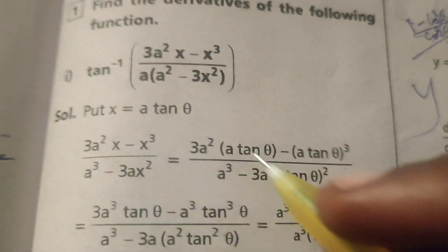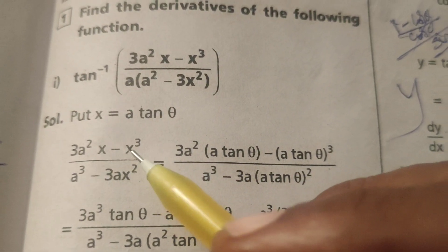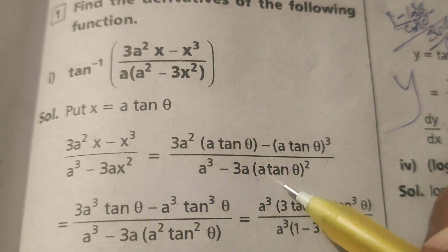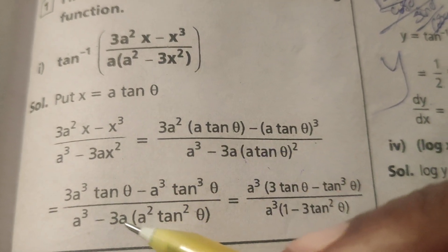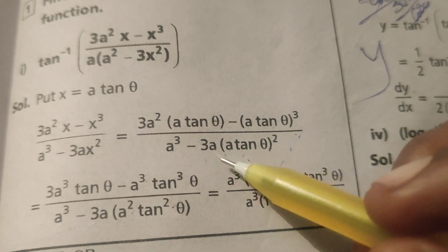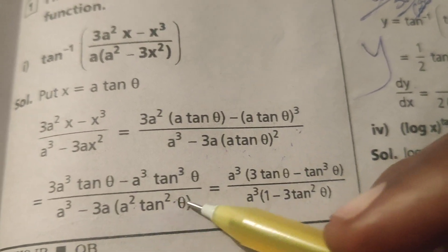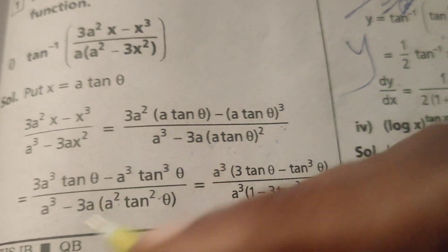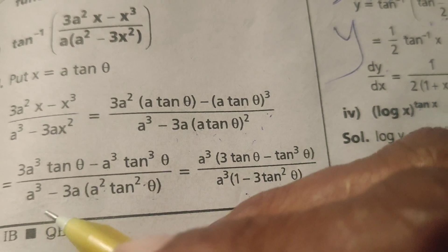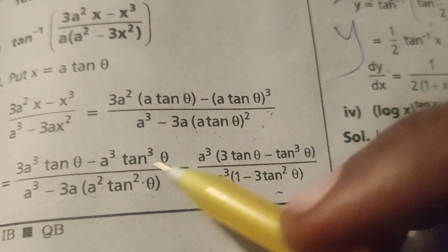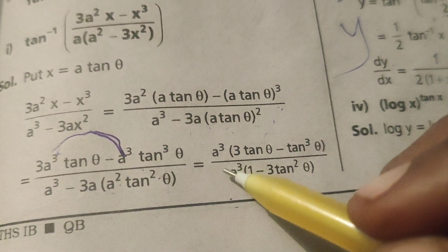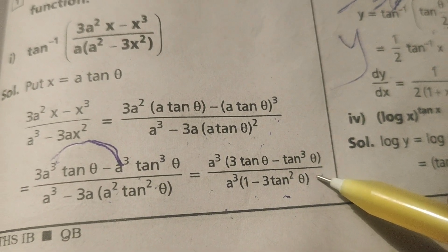Substituting x = a·tan θ: the numerator becomes 3a²(a·tan θ) minus (a·tan θ)³, which gives 3a³·tan θ minus a³·tan³θ. The denominator becomes a³ minus 3a·(a·tan θ)², which is a³ minus 3a³·tan²θ. In both numerator and denominator, a³ is a common factor.